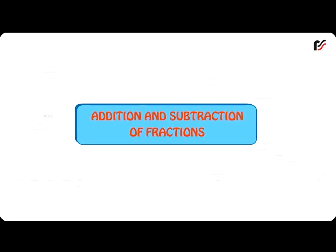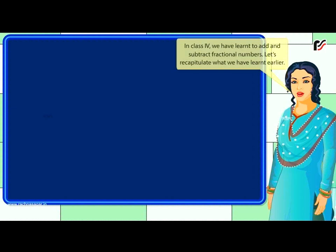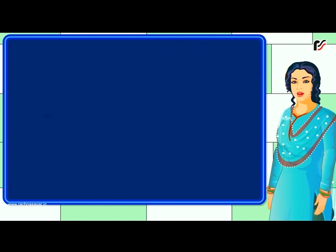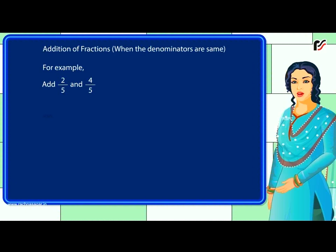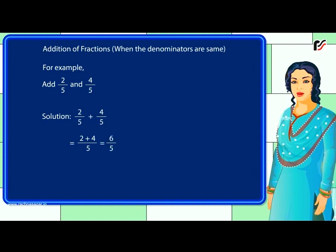Addition and subtraction of fractions. In class 4, we learnt to add and subtract fractional numbers. Let's recapitulate. Addition of fractions when the denominators are the same — for example, add 2 by 5 and 4 by 5. Solution: 2 by 5 plus 4 by 5 is equal to 6 by 5.